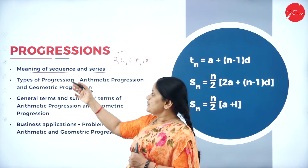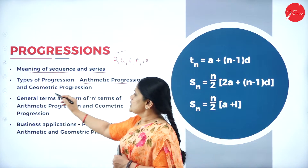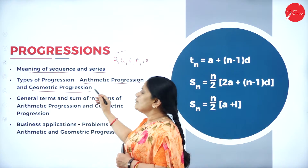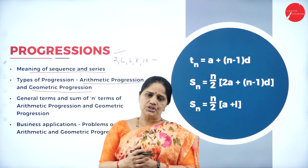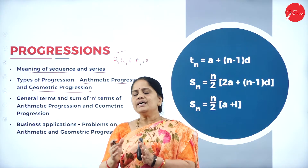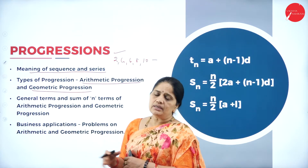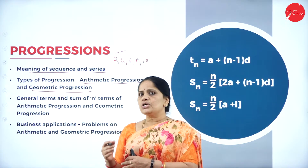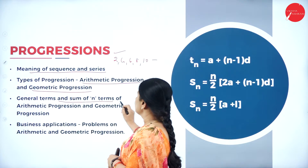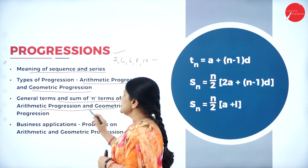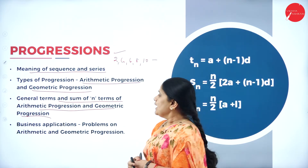We will be studying the difference between sequence and series, and also about arithmetic progression and geometric progression. In an arithmetic progression, there will be a common difference between the consecutive numbers. Whereas in a geometric progression, the consecutive numbers will have a common ratio. We will then have the general terms and sum of n terms of AP and GP — the nth term of the AP, the nth term of the GP, etc.